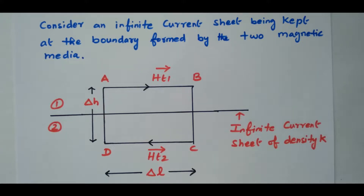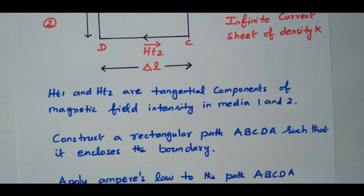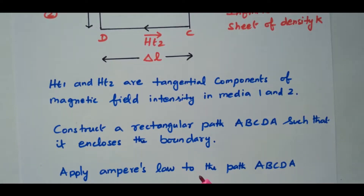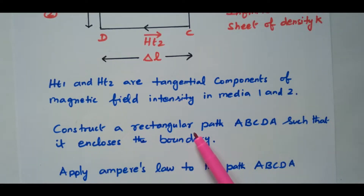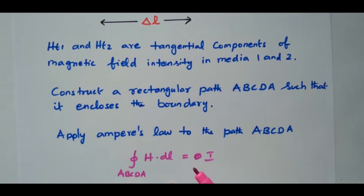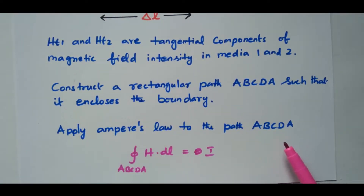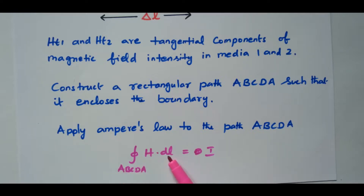HT1 and HT2 are the tangential components of magnetic field intensity in media 1 and 2. We construct a rectangular path ABCDA such that it encloses both media. Now we apply Ampere's law to this path: the integral of H dot dL around the closed path ABCDA equals I. We will proceed with further simplification.